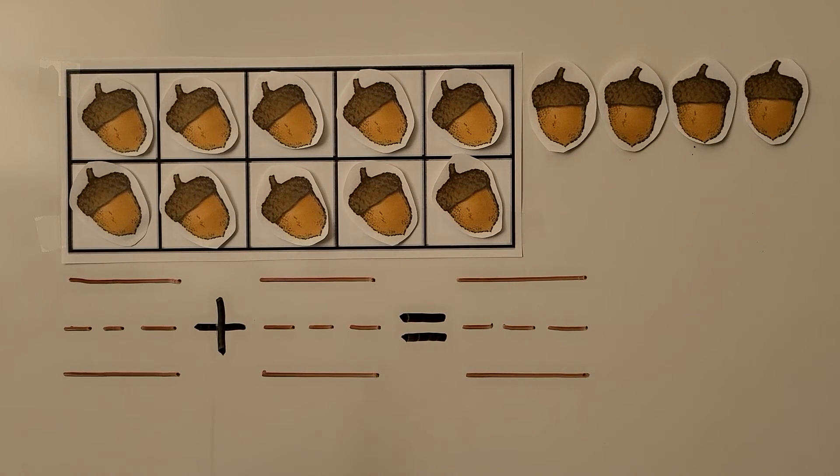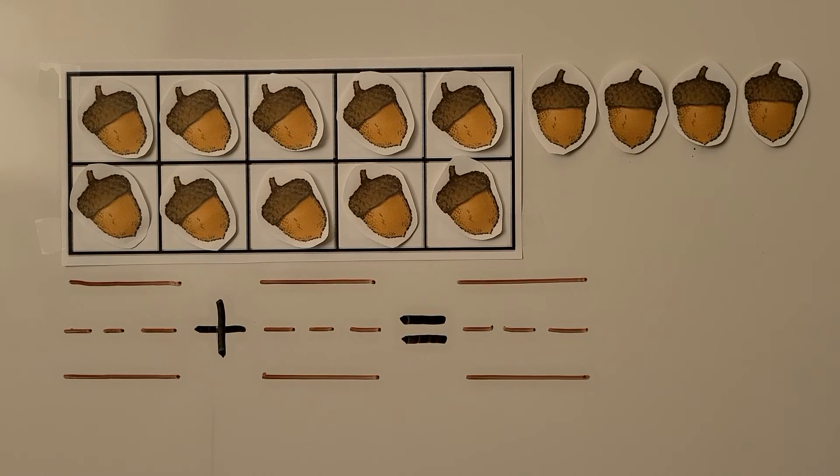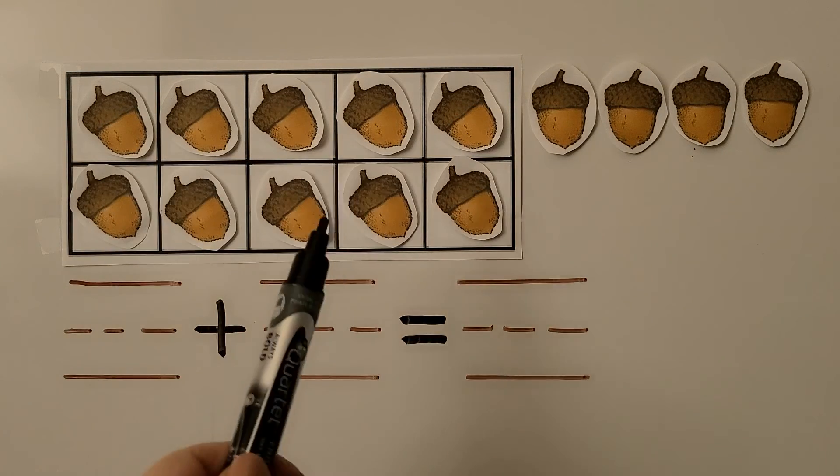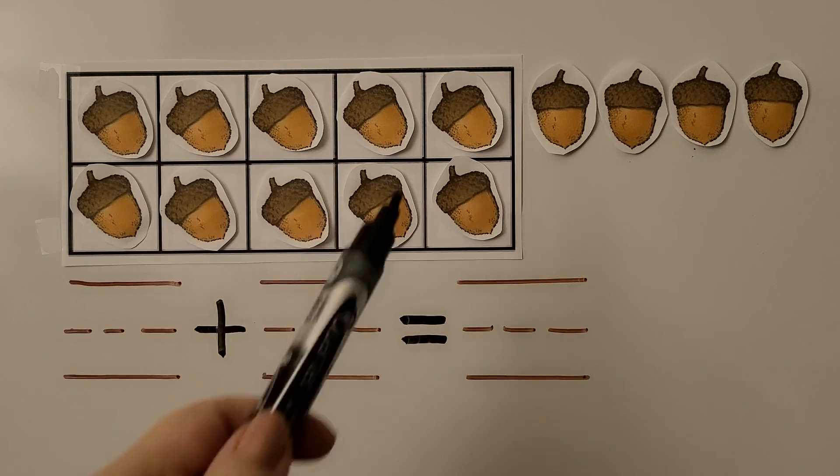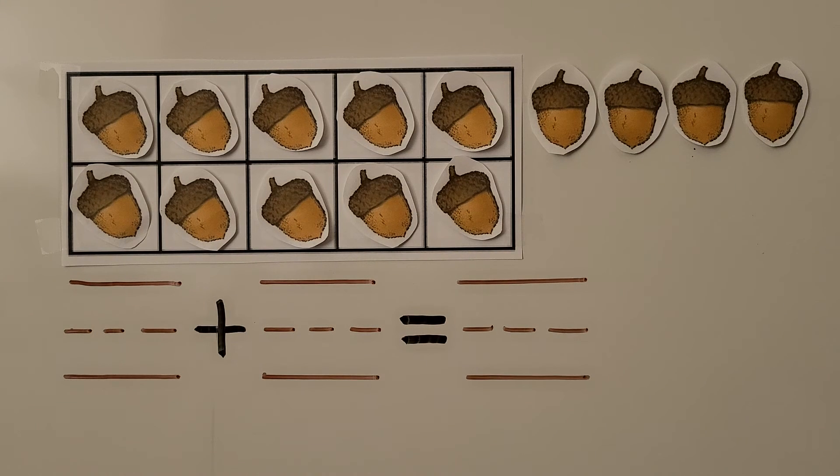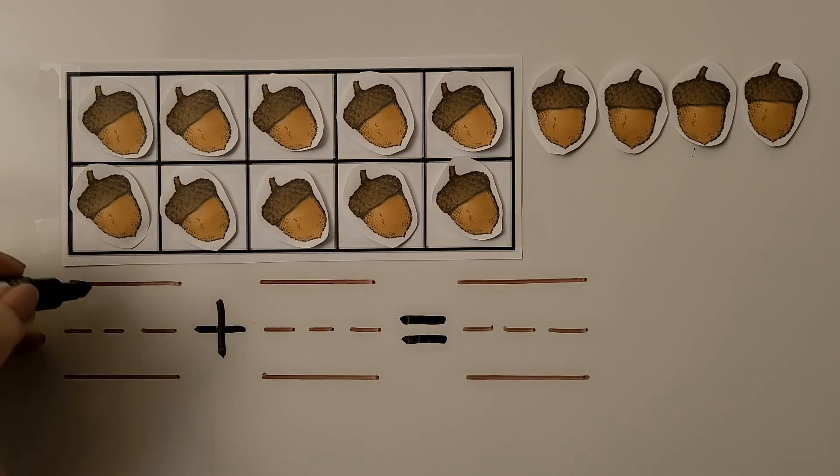Here we have some acorns and a 10 frame. Without counting all of the acorns we can see there are 10 and 4 more. We have a full 10 frame which is 10 and we have 4 more. And we can complete an addition sentence to match what we see. We have 10. We can write a 10.